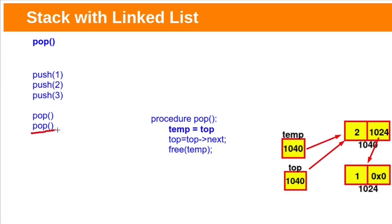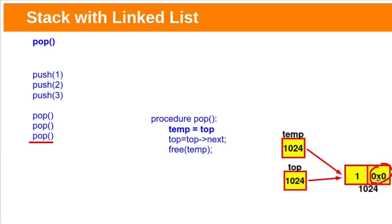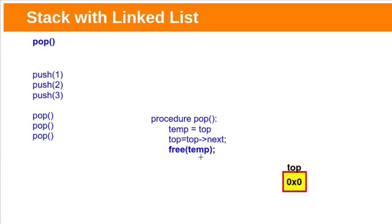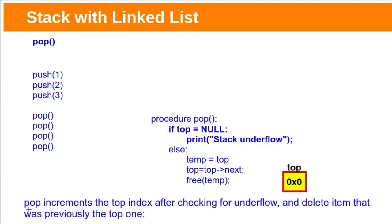The same process repeats for the next pop operation — store top in temp, advance top to the next node, then delete the previous node. For the last remaining node, its next field is null, so after advancing, top becomes null and the stack is empty. If we try to perform another pop on an empty stack, stack underflow will happen. To handle this, we check if top equals null — if so, raise a stack underflow error. We need to advance top and delete the previous top only after checking the underflow condition.